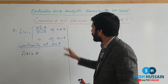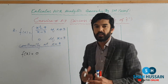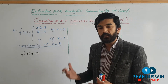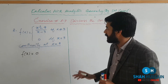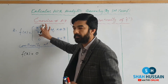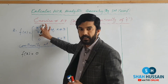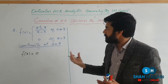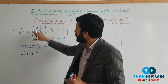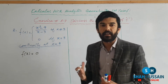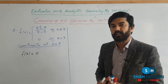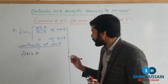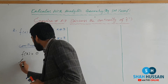Dear students, we do not need to find the left hand limit and right hand limit separately, because x ≠ 3 means x is either less than 3 or greater than 3. So both the left hand limit and right hand limit will apply to the same portion — the simple function portion. In such cases, the limit exists, so we will find the overall limit.